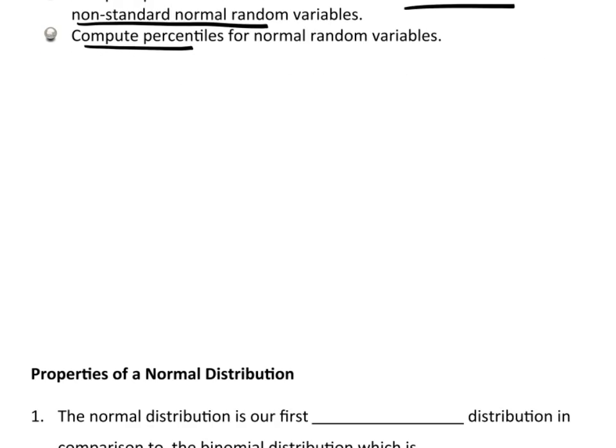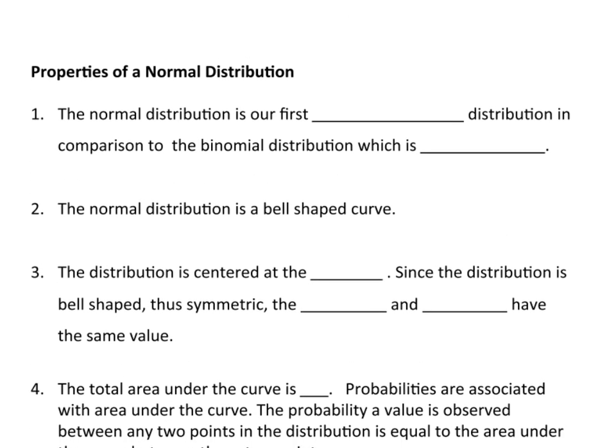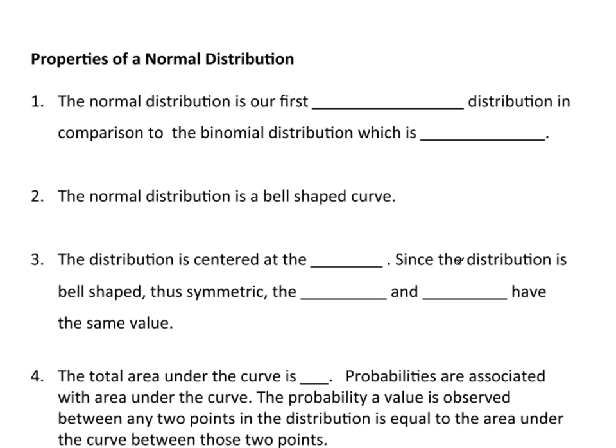So let's start off talking about some properties of the normal distribution. The normal distribution is actually our first continuous distribution. And this is a comparison to the binomial, which is discrete. Now remember the definition of a discrete variable or discrete random variable compared to a continuous. The discrete, it's countable: one, two, three, four, five. That sort of a thing. And that's what we have with the binomial.